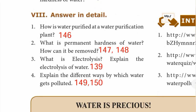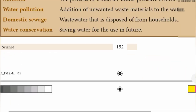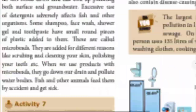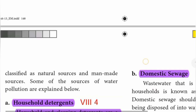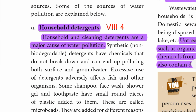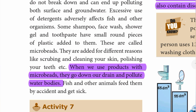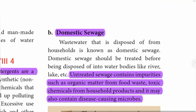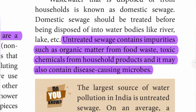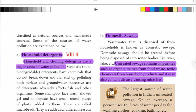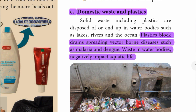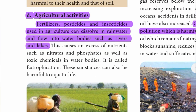Detail question 4: Explain the different ways by which water gets polluted. Page numbers 149 and 150. First, household detergents — household and cleaning detergents are a major cause of water pollution; products with microbeads go down drains and pollute water bodies. Second, domestic sewage — untreated sewage contains impurities such as organic matter from food waste, toxic chemicals from household products, and disease-causing microbes. Third, domestic waste and plastics — plastics block drains, spreading vector-borne diseases such as malaria and dengue, and waste in water bodies negatively impacts aquatic life. Fourth, agricultural activities — fertilizers, pesticides, and insecticides used in agriculture can dissolve in rainwater and flow into water bodies such as rivers and lakes.